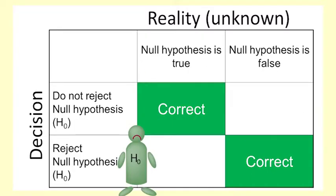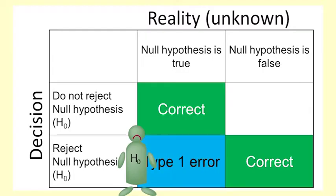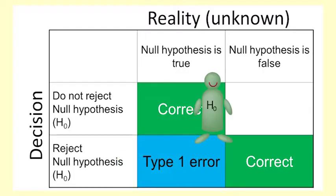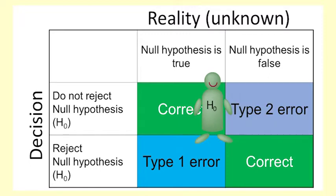If we reject the null hypothesis when it is true, that is a Type 1 Error. If we do not reject the null hypothesis when it is false, that is a Type 2 Error.